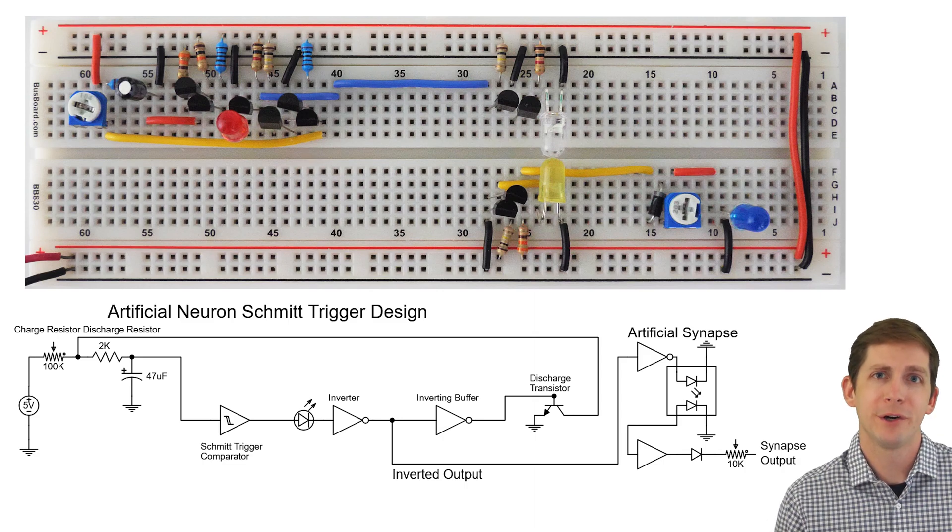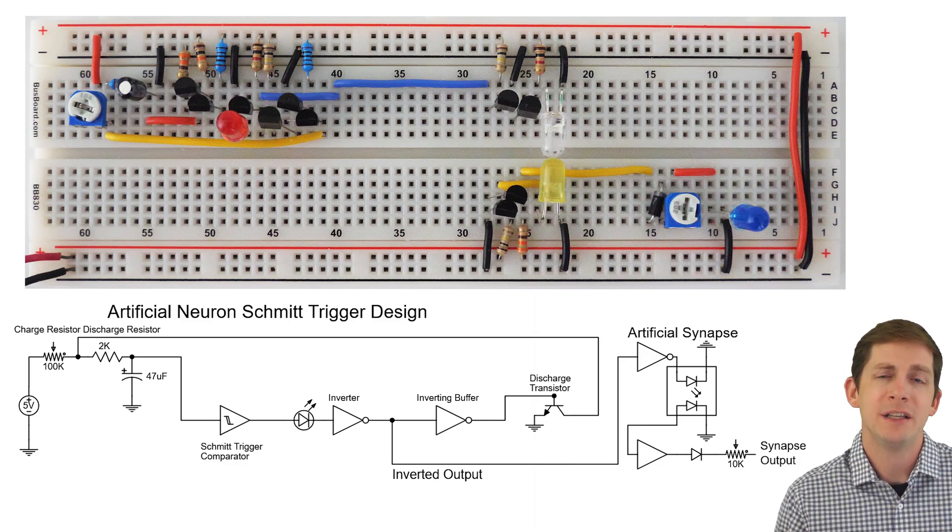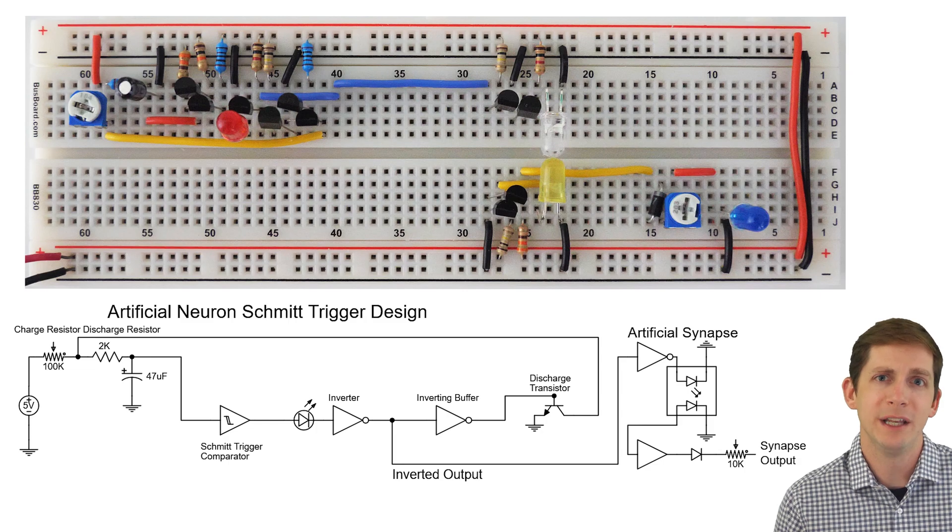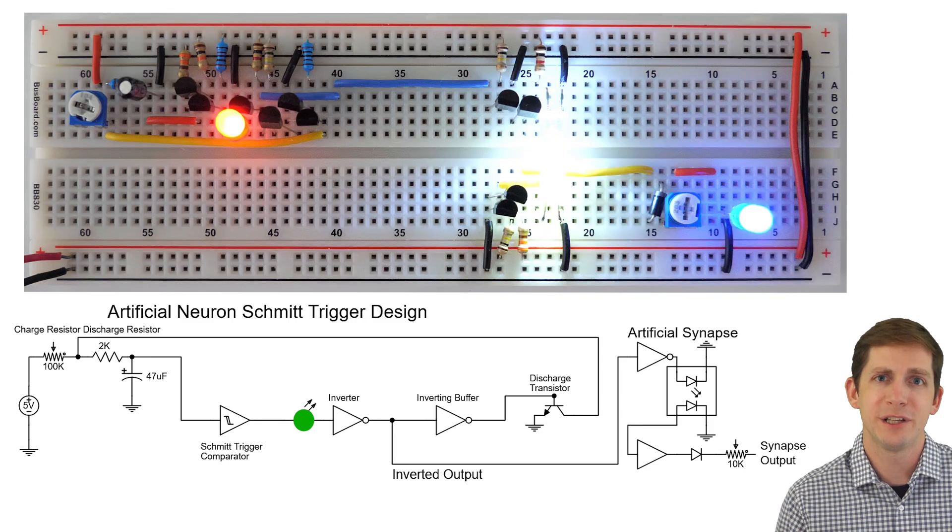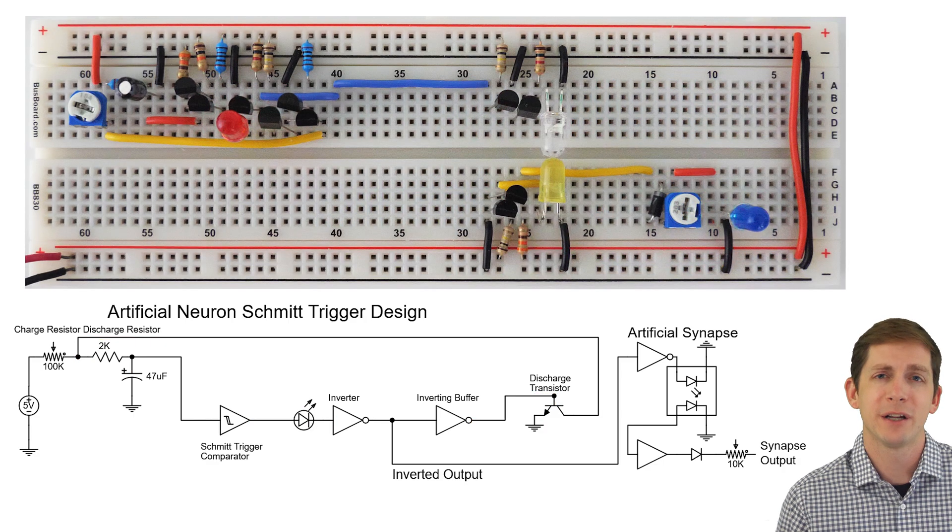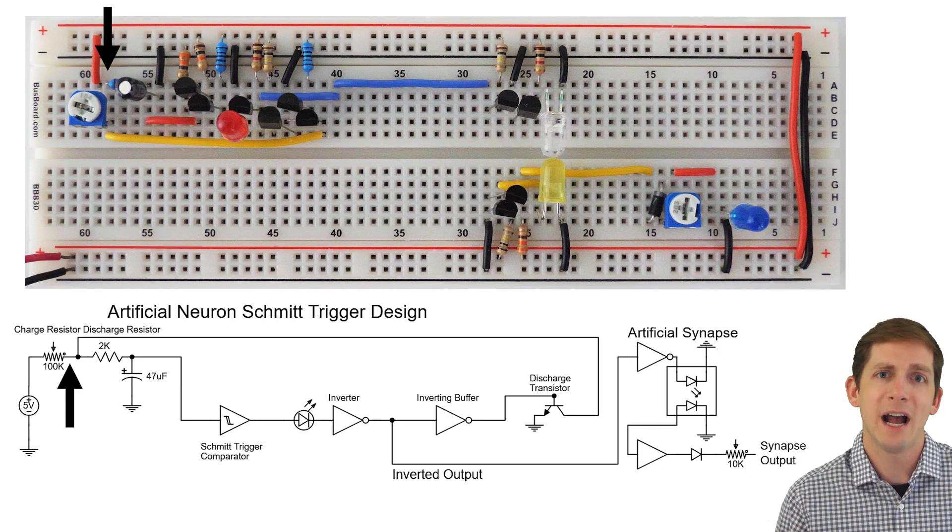To ensure all the synapses turn on with a single output signal, a buffer or inverting buffer was needed, and I decided to use an inverting buffer. Each synapse has a separate independent and isolated output. When the output is on, the capacitor is discharged through the discharge resistor to ground via the discharge transistor. Each neuron can receive a large number of inputs and activate a large number of artificial synapses.